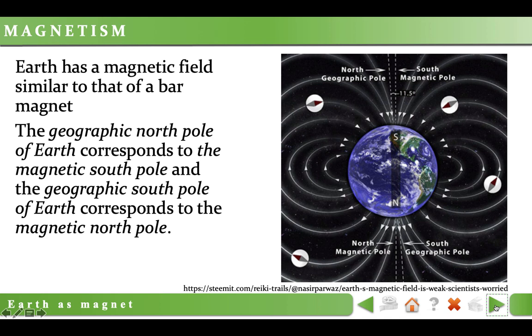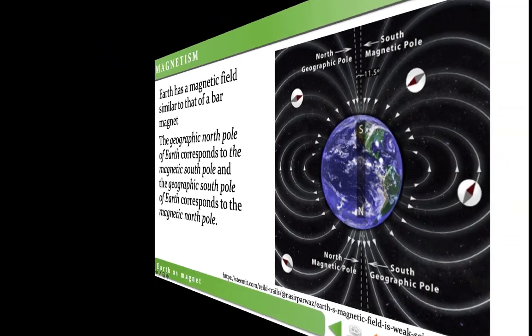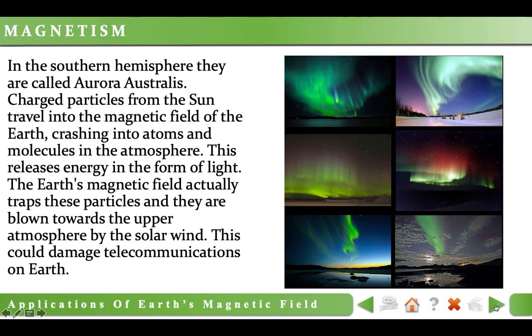Earth, being a magnet, has a magnetic field around it, which protects it from furious electromagnetic storms generated by the sun. Charged particles from the sun travel into the magnetic field of the earth, which directs them to the poles, crashing into atoms and molecules in the atmosphere. This releases energy in the form of light.